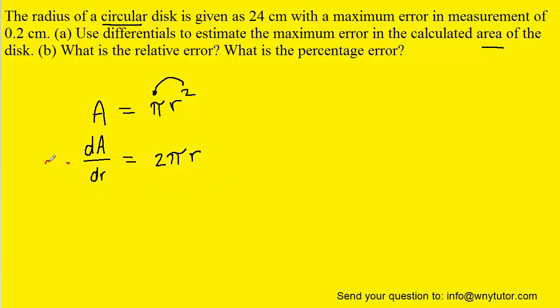We could then multiply both sides of the equation by dr in order to isolate the dA term. And the reason we want to do that is because the maximum error will indeed turn out to be dA. That's actually what the question is asking us to find.